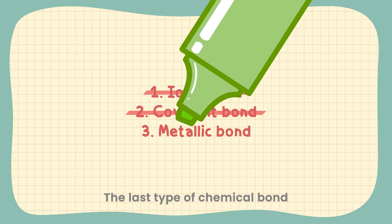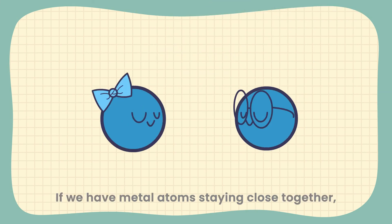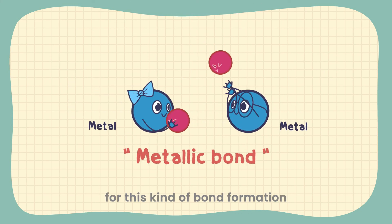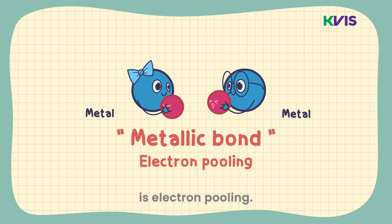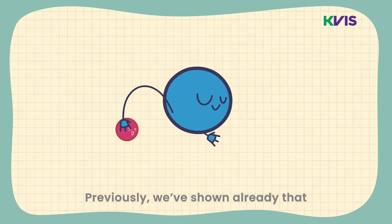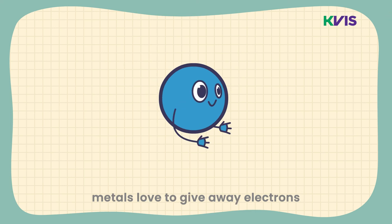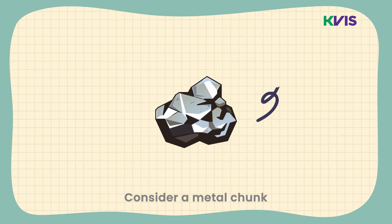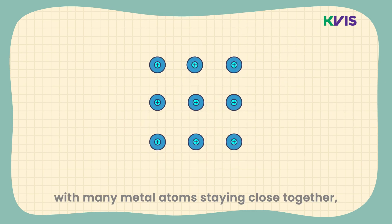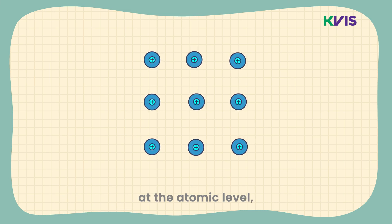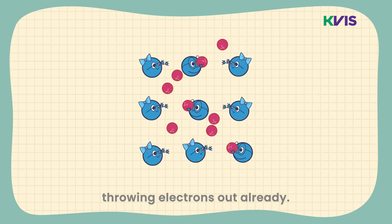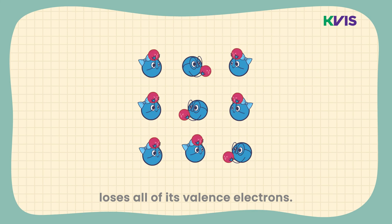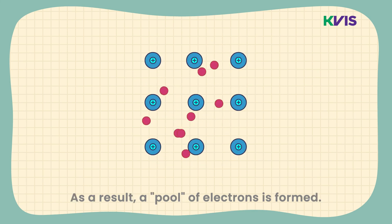The last type of chemical bond is the metallic bond. If we have metal atoms staying close together, the main mechanism for this kind of bond formation is electron pooling. Metals love to give away electrons and turn into cations. Consider a metal chunk with many metal atoms staying close together. At the atomic level, there are many metallic cores releasing electrons. Each atom in a metallic crystal loses all of its valence electrons, and as a result, a pool of electrons is formed.